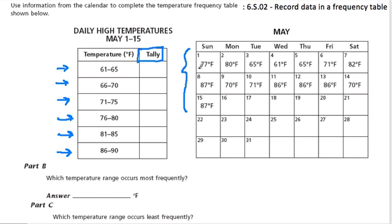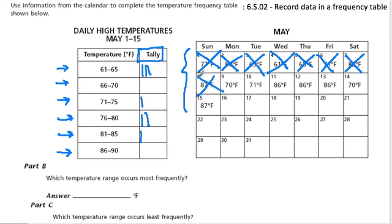I want to cross them out as I go. So 77 occurs right here. 80 also occurs right here. 65 occurs here. 61 also here. 65 there. 71 here. 82 up here. Don't be afraid to take your time and cross it out. 70 will go right here. 71 right here. 86 right here. 86, 86 — two more 86s — and then 70.